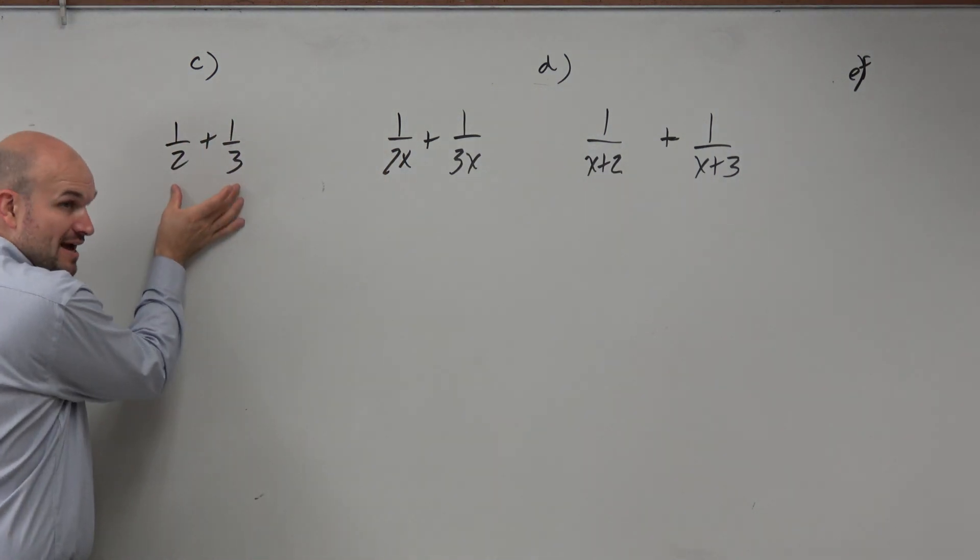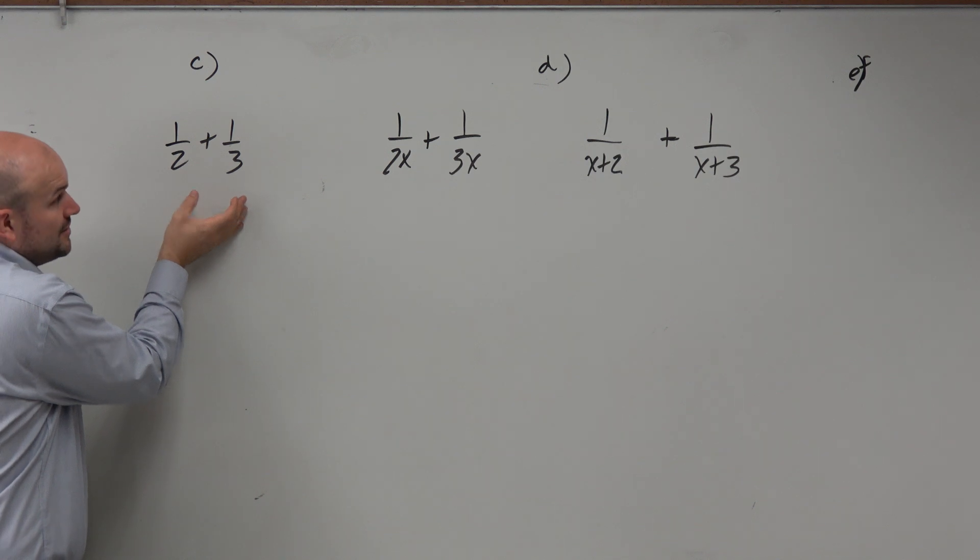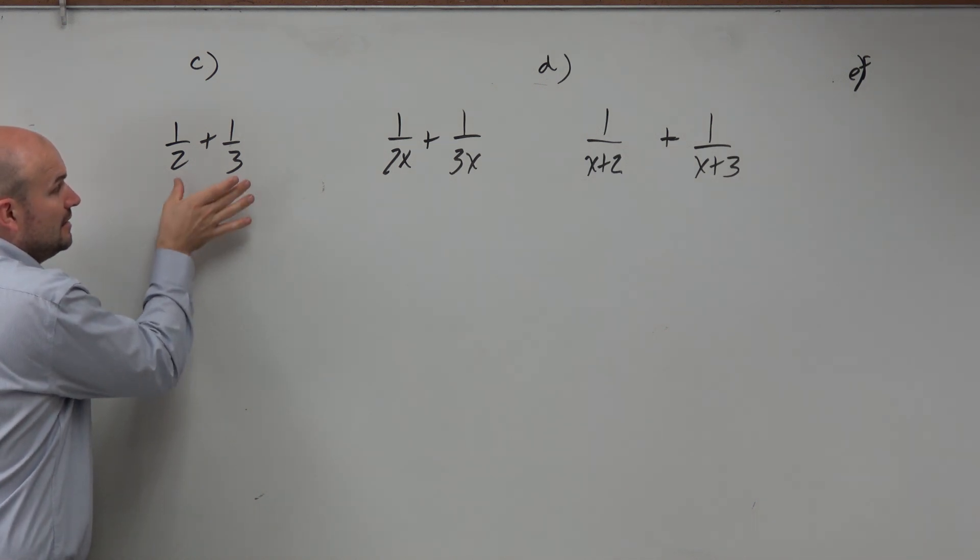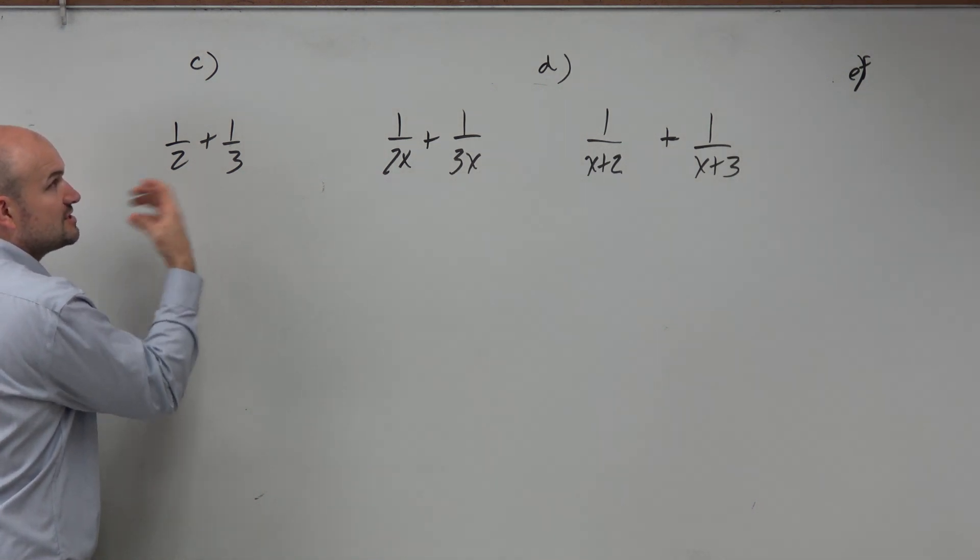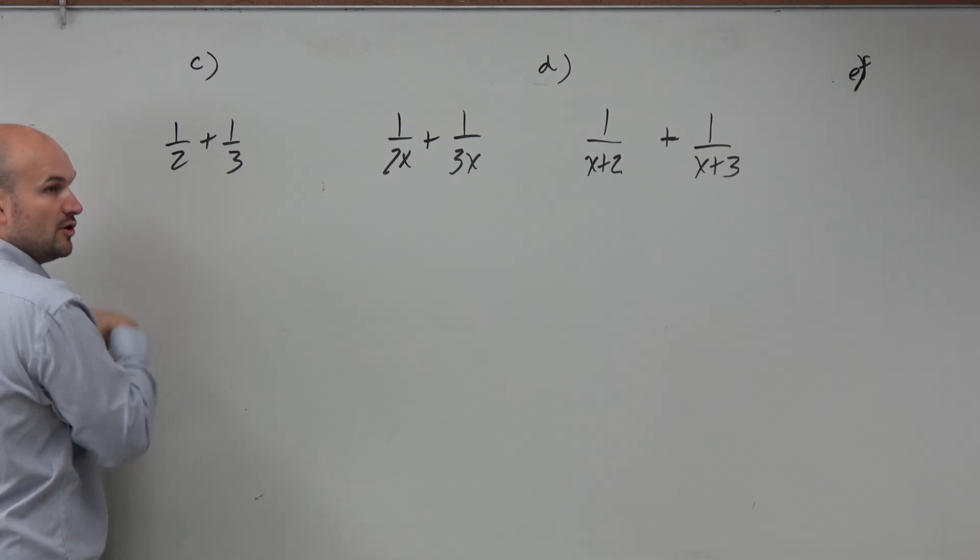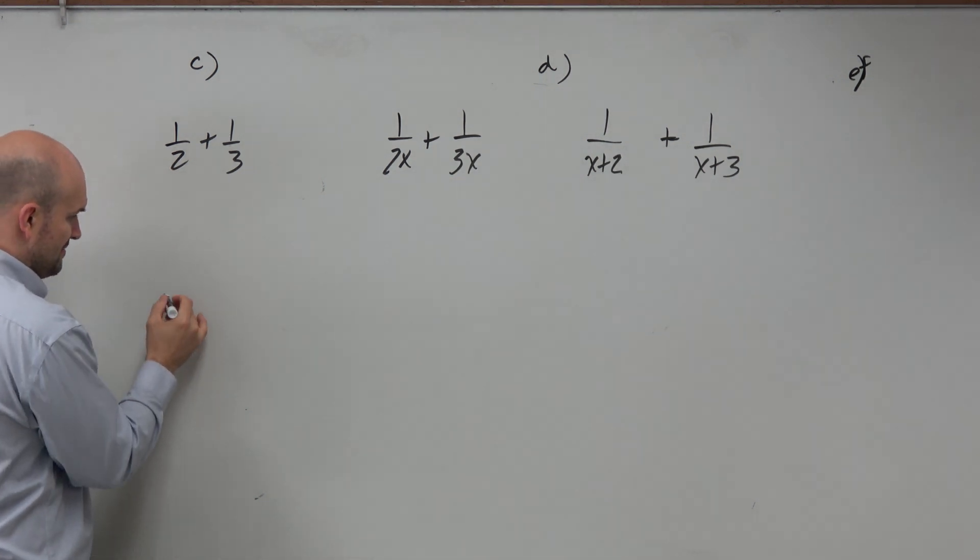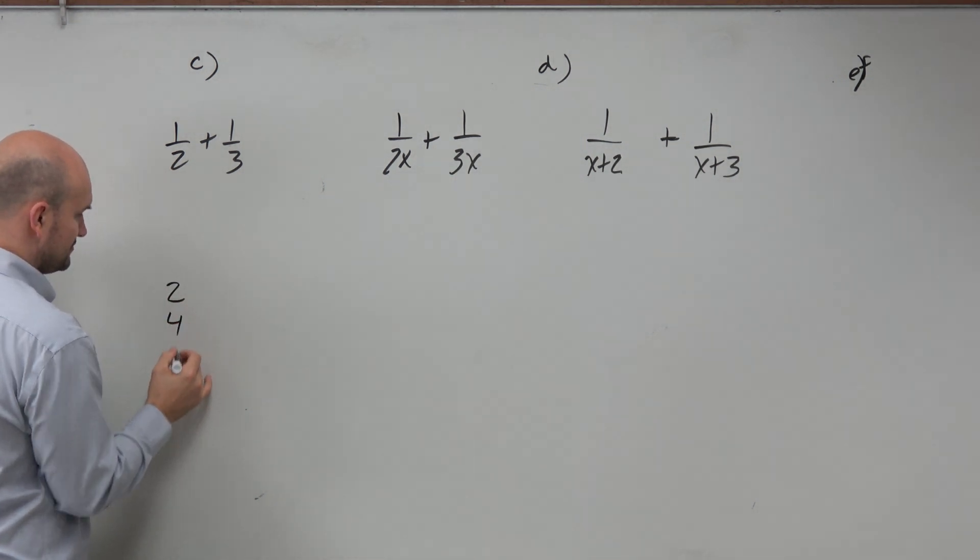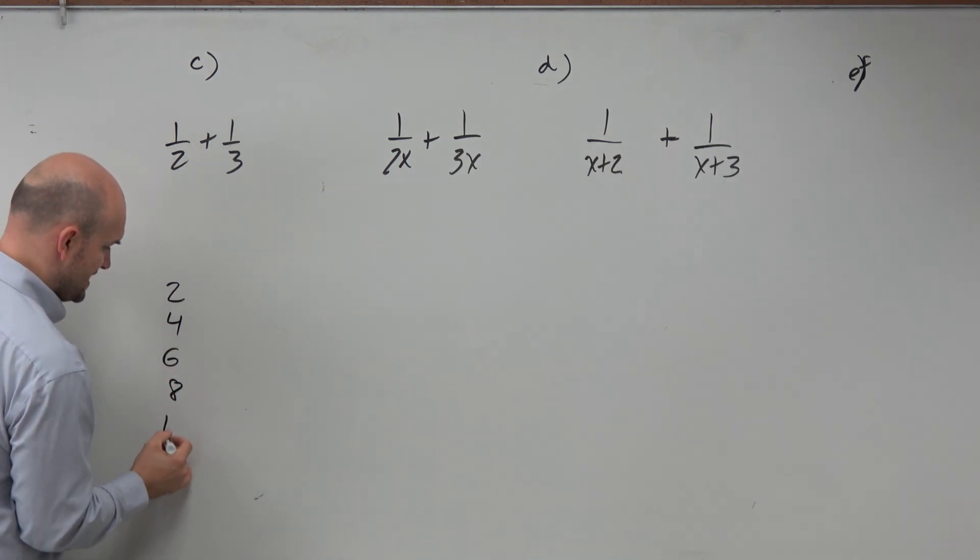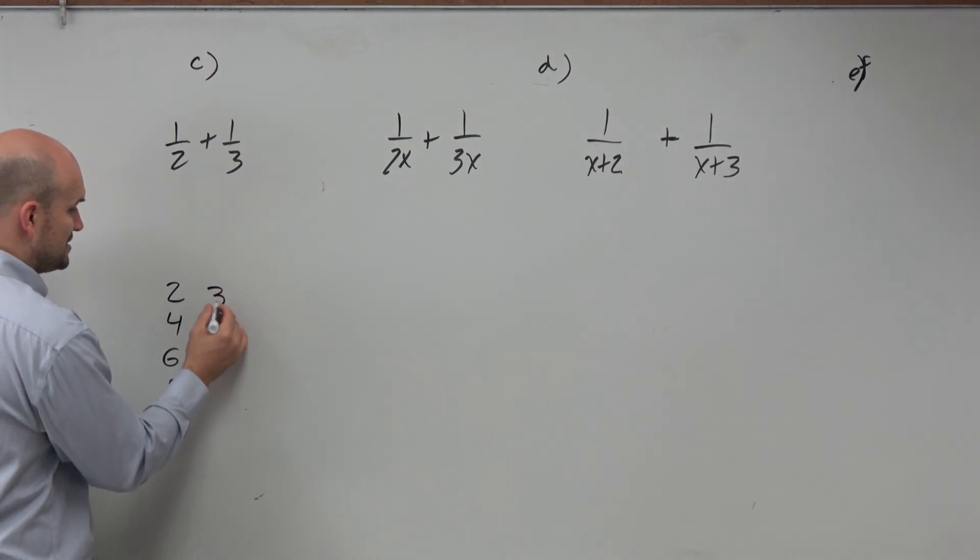If we're going to add fractions, we have to have common denominators. So therefore, you say, what is the smallest number that 2 and 3 both divide into? And some of you, this is not 2, 4, 6, 8, 10. And what we can do is we can list the multiples of 3, 6, 9, 12.